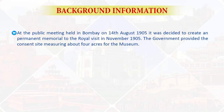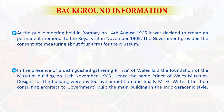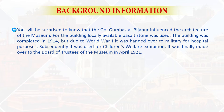In November 1905, the government provided a site measuring about four acres for the museum. In the presence of a distinguished gathering, the Prince of Wales laid the foundation of the museum building on 11 November 1905, hence the name Prince of Wales Museum. Designs for the building were invited by competition, and finally Mr. G. Wittet, the then consulting architect to government, built the main building in the Indo-Saracenic style.